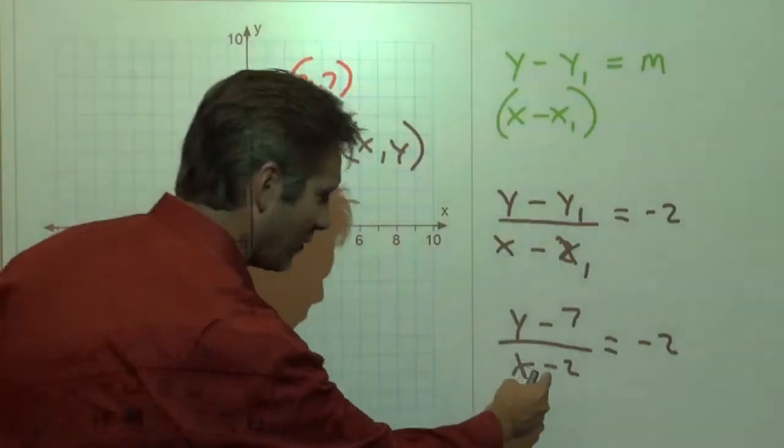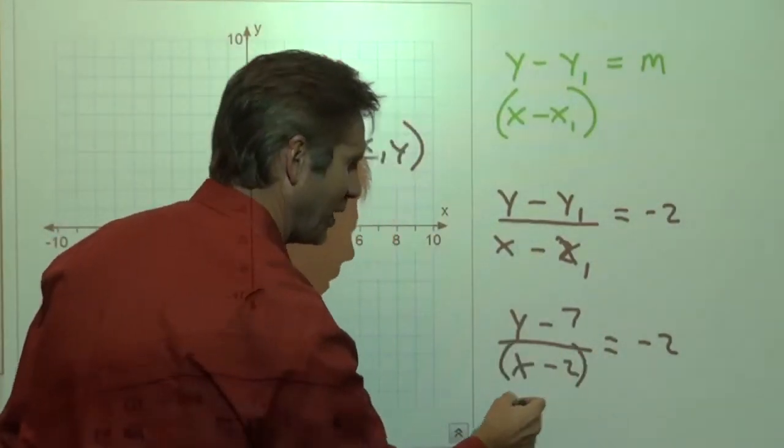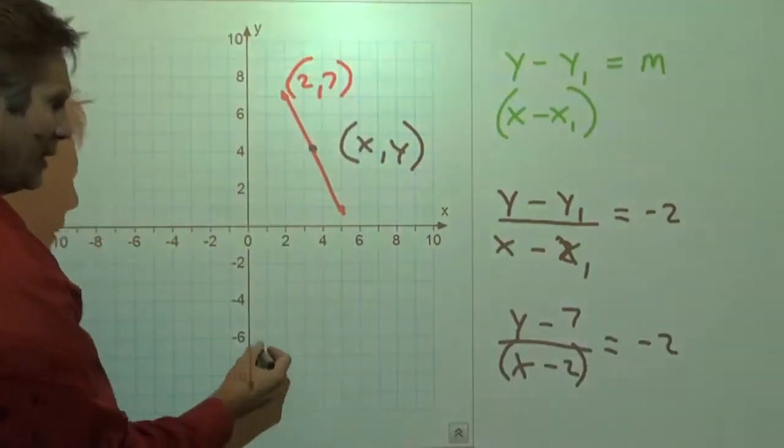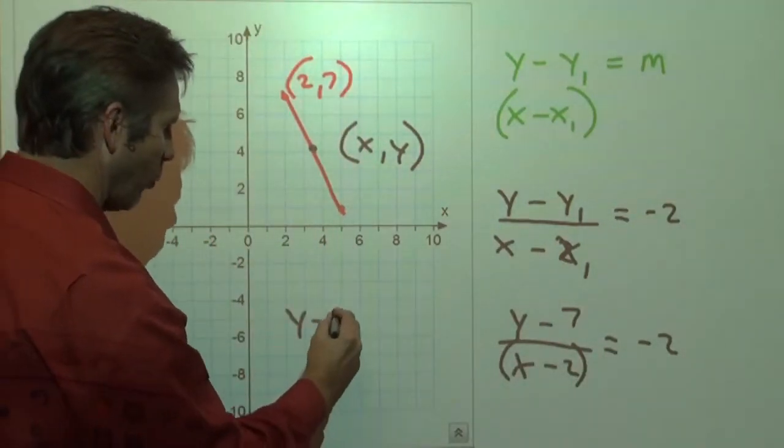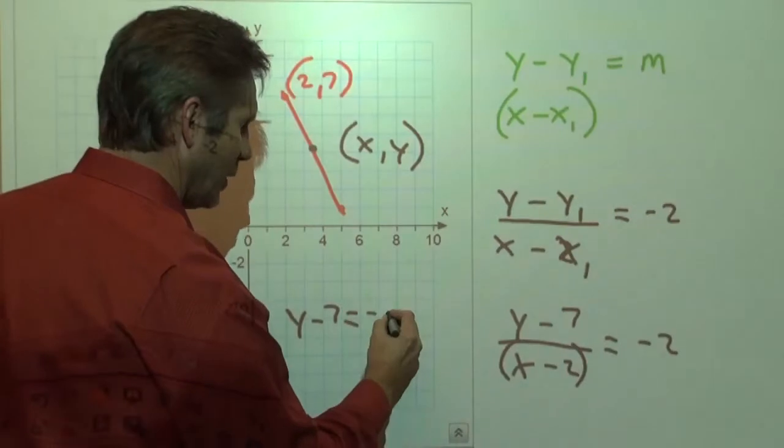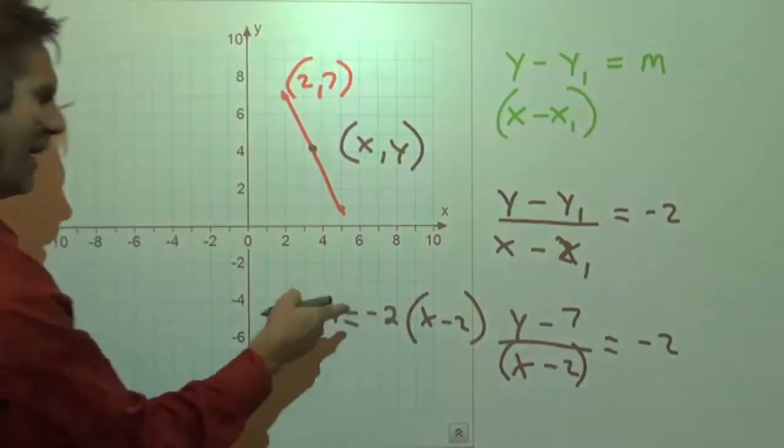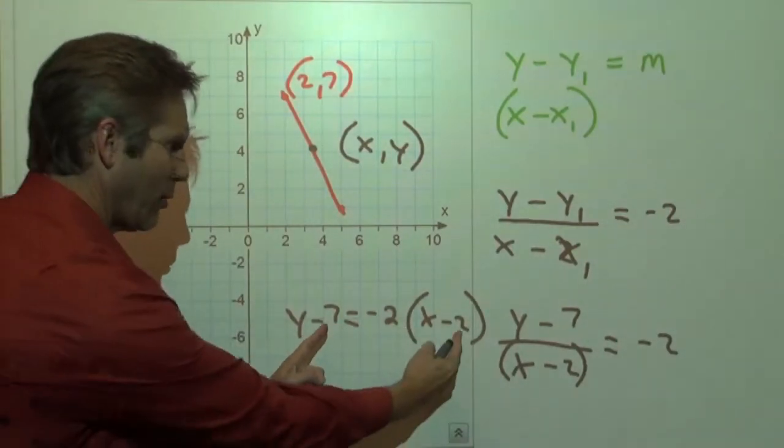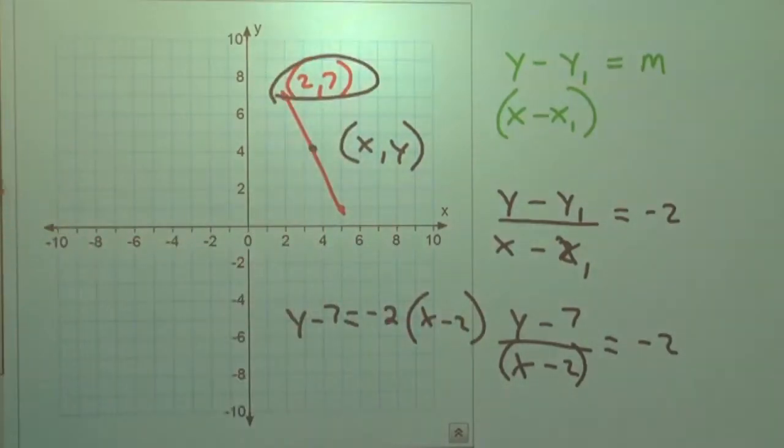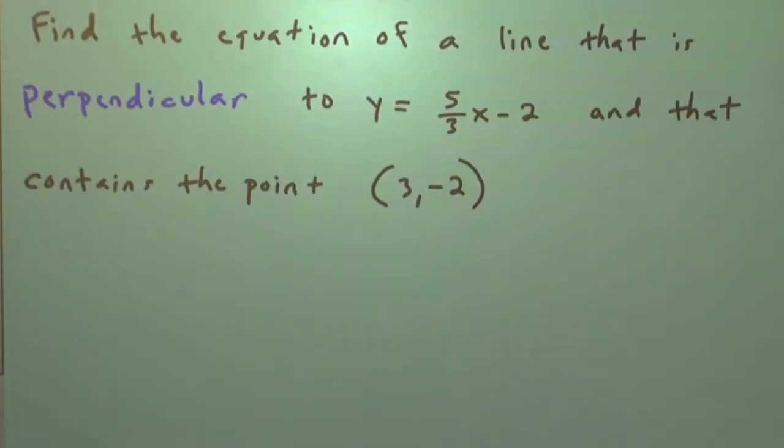And now what we can do is swing this puppy up here. This quantity, x minus 2, can jump up yonder. So what we're going to end up with is y minus 7 equals negative 2 times x minus 2. That's point-slope form, the x-coordinate and the y-coordinate of that point right there. If you like that, fine. If not, no big whoop.